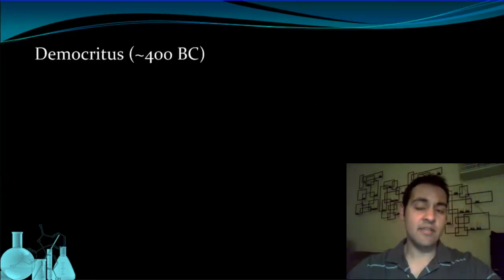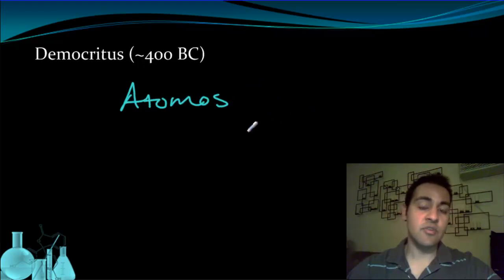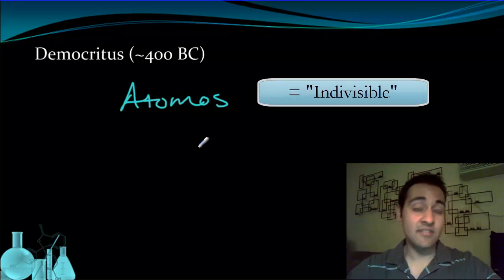Our earliest idea about atoms actually came from a philosopher instead of a scientist. Democritus is the name of an ancient Greek that lived around 400 B.C. His major idea was that all stuff in the world was made up of tiny, tiny pieces he called atomos. The atomos is a Greek word that translates roughly to indivisible.